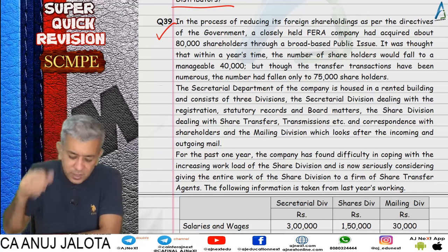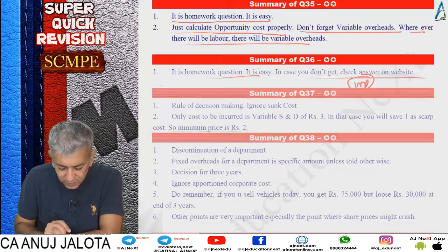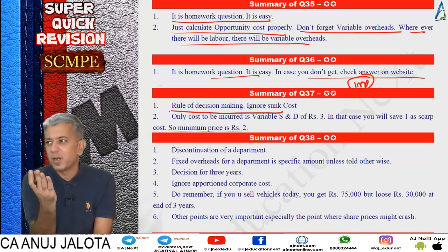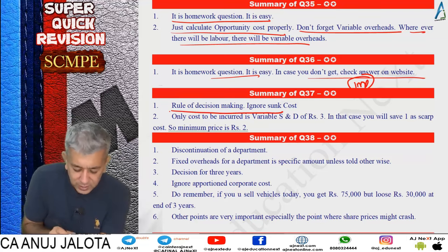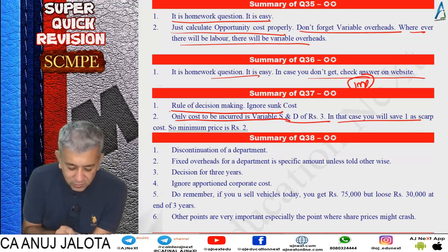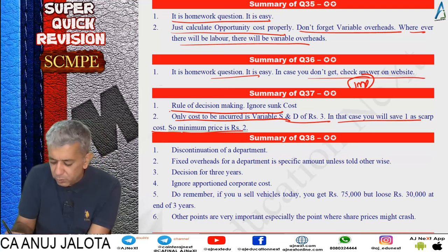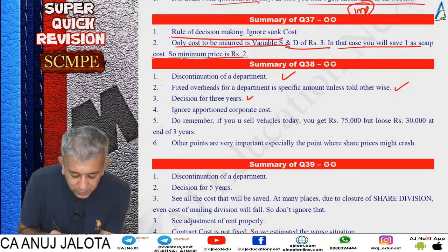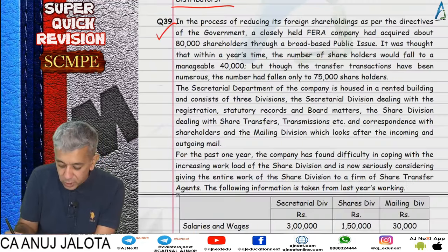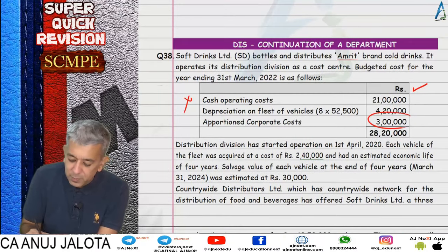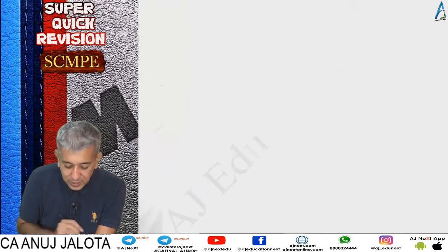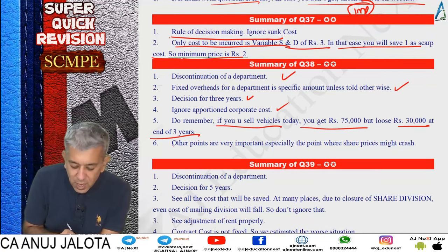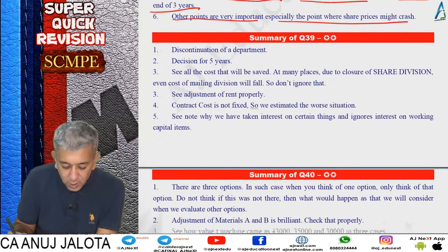Previous question recap: sunk cost rule - ignore the 5,000 units already produced last year. Only cost to incur is variable S&D of 3 rupees; save scrap cost of 1 rupee, so minimum price = 2 rupees. For Q38 discontinuation: fixed cost for a department is a specific amount unless told otherwise. Decision was for 3 years. Ignore apportioned corporate costs. If you sell vehicles today, get 75,000 but lose 30,000 scrap value at end of 3 years. Share price crash risk was an important qualitative point.